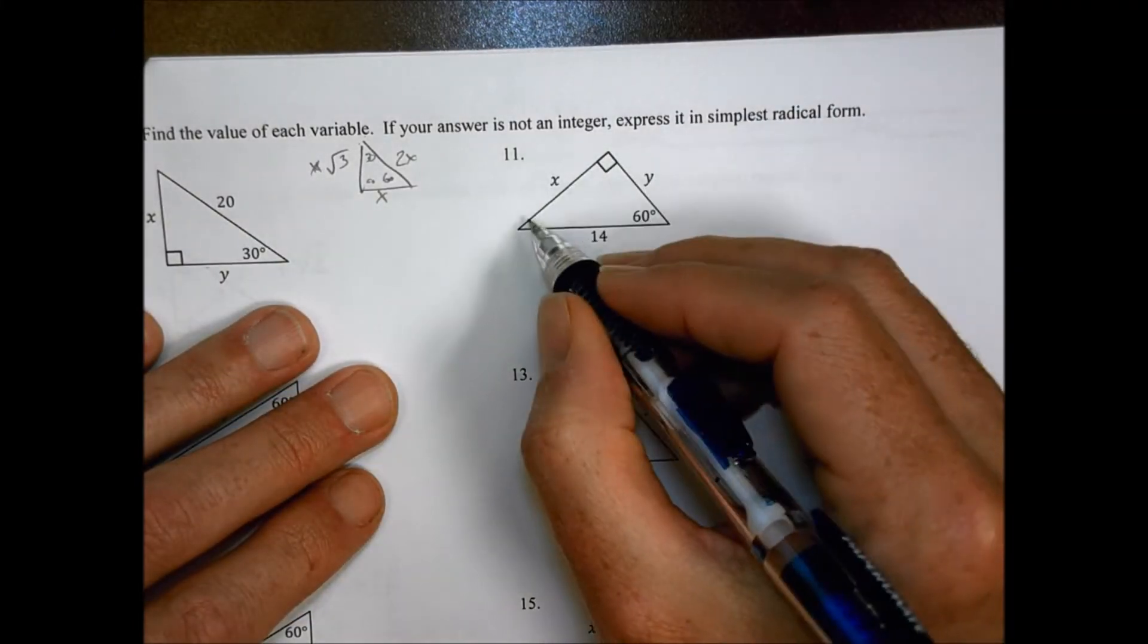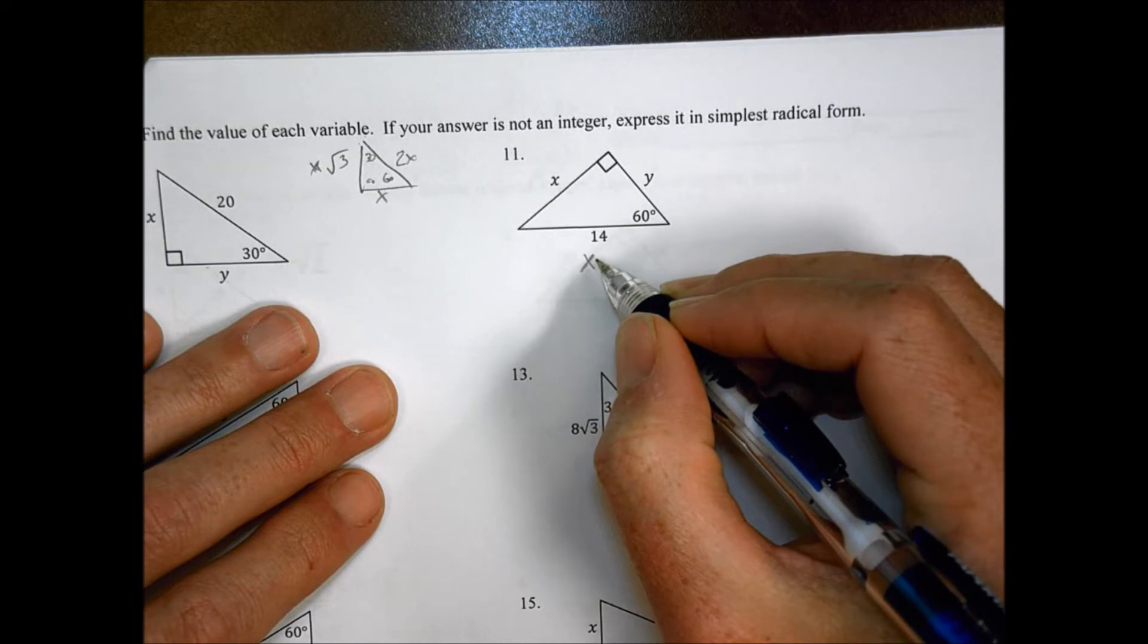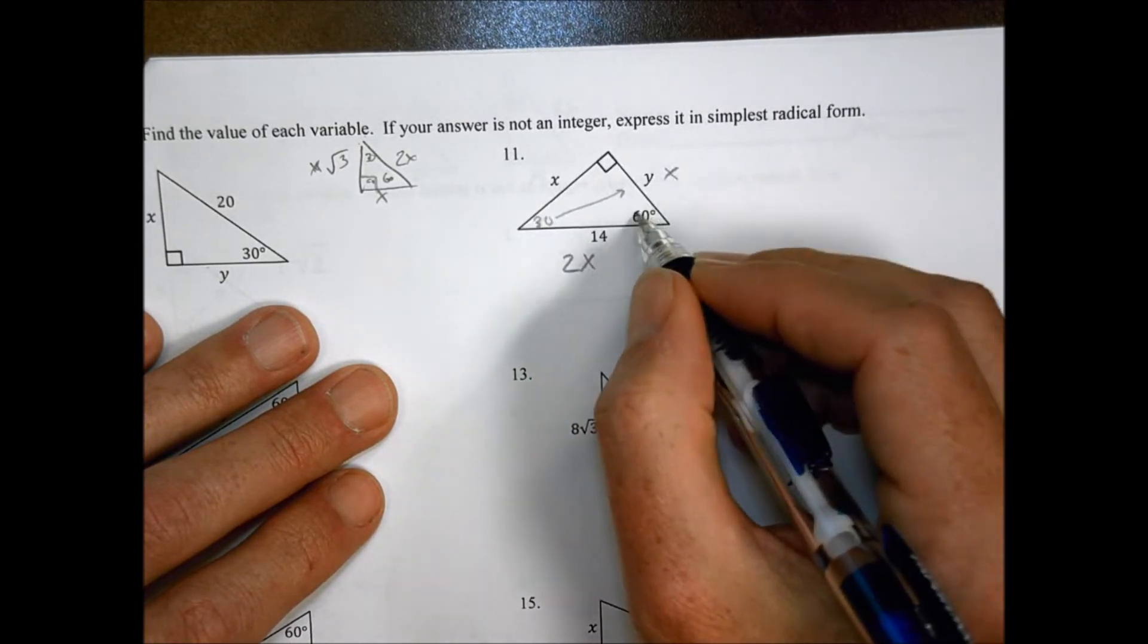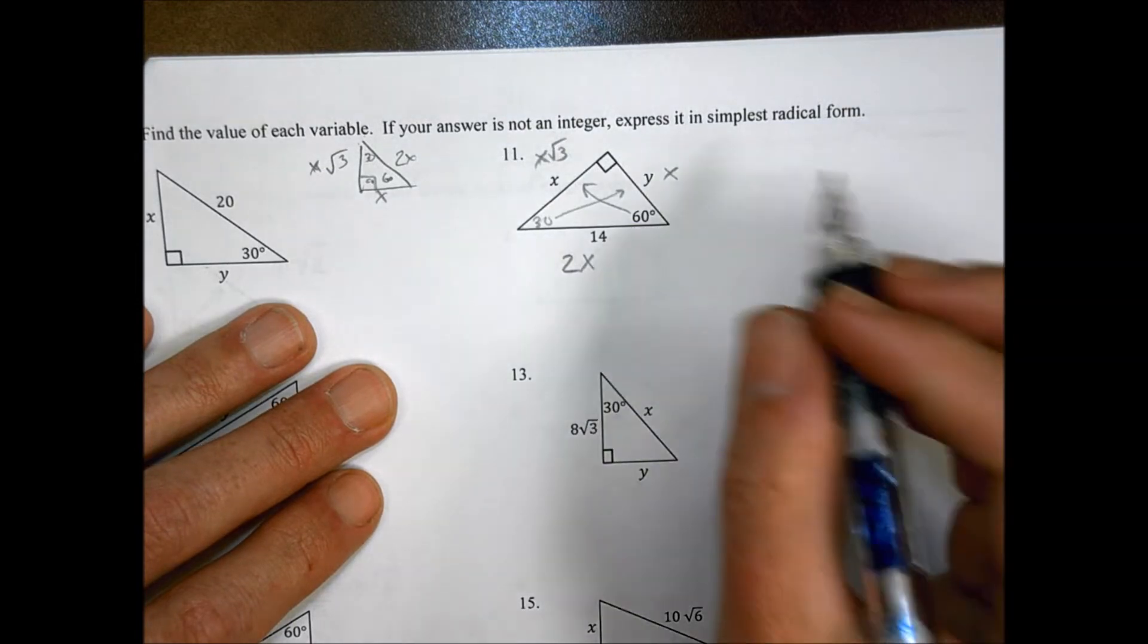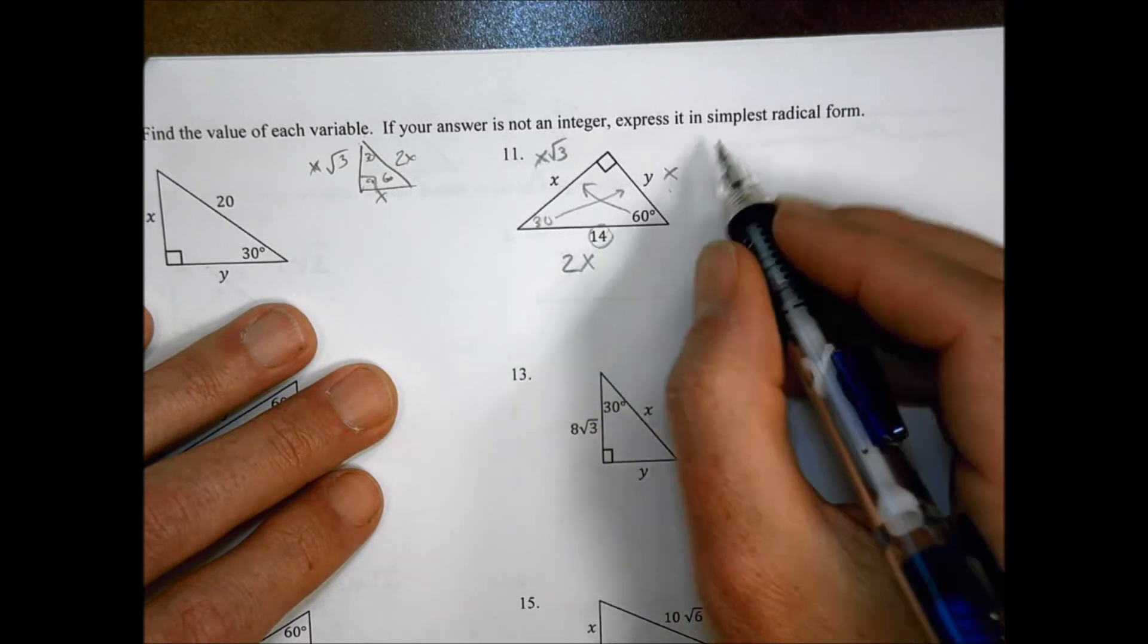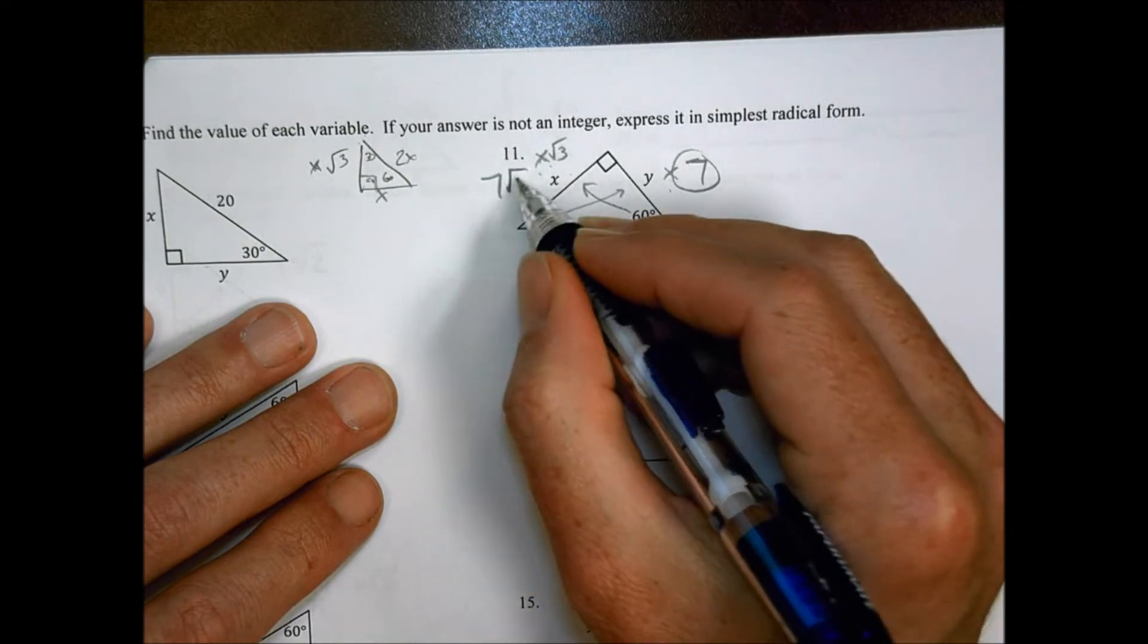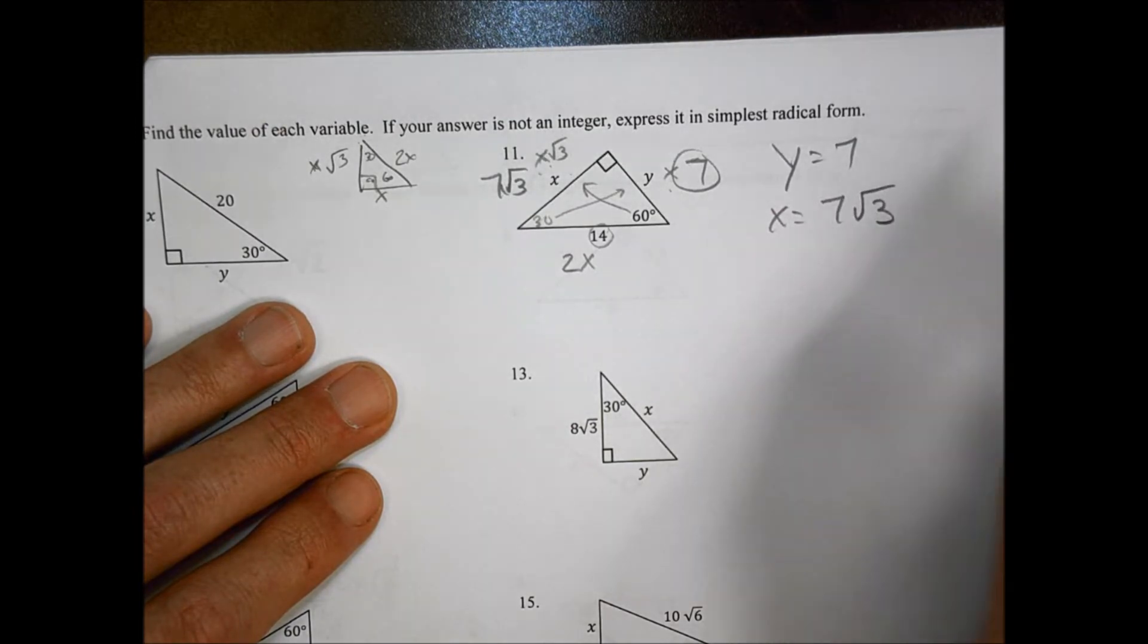On number 11, our side that's across from the 90 degree, this is our 2X side. The side that's across from our 30, here's my 30, is our X side. And our one across from the 60 is our X root 3 side. So if this is 2X, then X is going to be half of that. So if I had 14, this becomes 7. Now that I know my X value, then my one over here is X root 3. This becomes 7 root 3. So Y equals 7 and X equals 7 root 3.